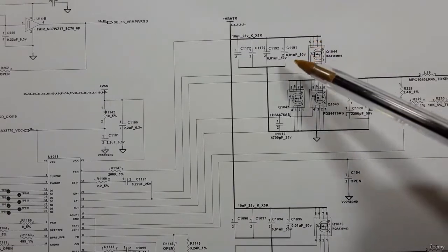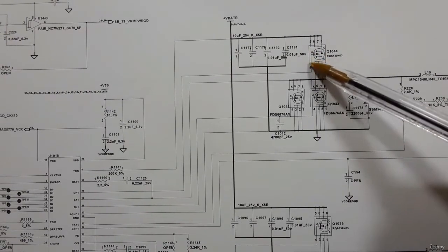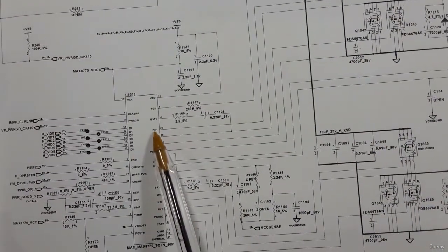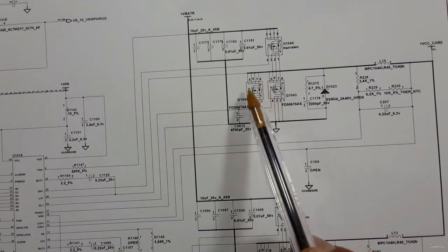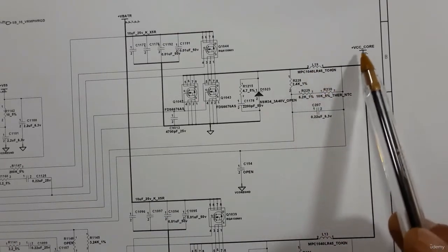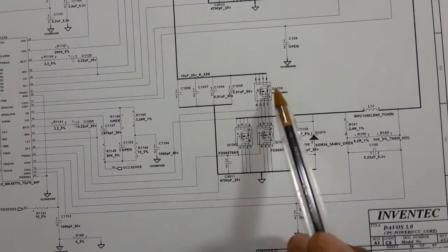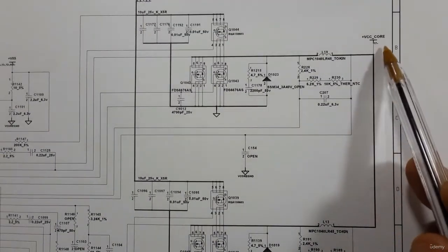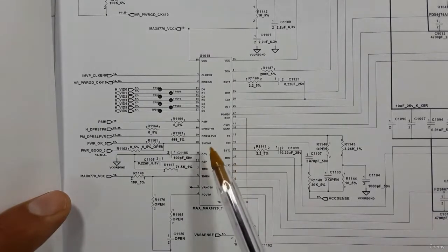We have the power management IC and the upper MOSFET connected to the battery voltage — 19 volts. When this 19 volts is present, the gate control signal for this MOSFET comes from the drive signals: drive high and drive low. We have 12 MOSFETs, a coil L19, and we get VCC core. For the second channel, the same working principle applies — three voltages, a coil, and we get VCC for the CPU.